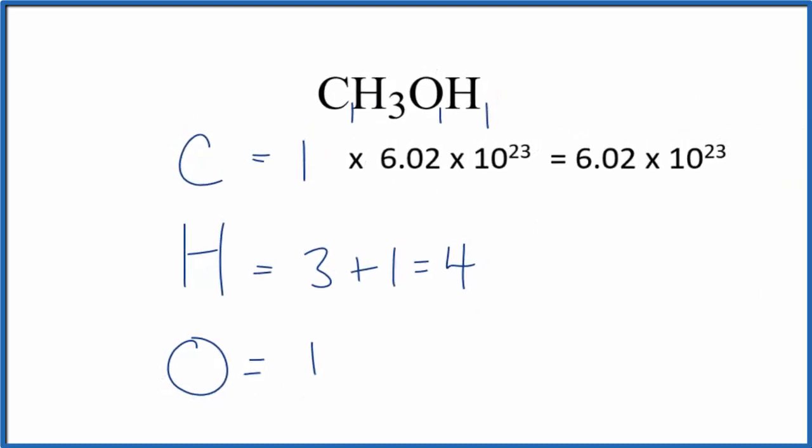For the hydrogen, you would multiply it by four. So you have four total hydrogen atoms. So for one mole, you'll multiply that four times Avogadro's number. That'll tell you the number of hydrogen atoms in CH3OH.